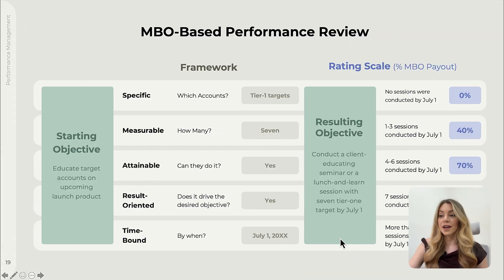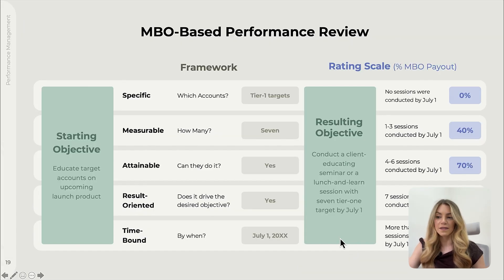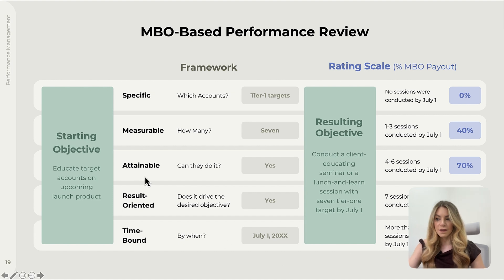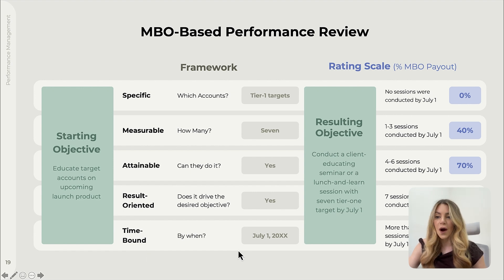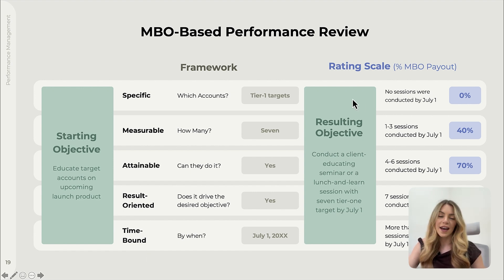Another framework is Management by Objectives, the MBO. This involves setting specific, measurable, attainable, result-oriented, and time-bound objectives. Progress is then rated to ensure clarity and accountability.